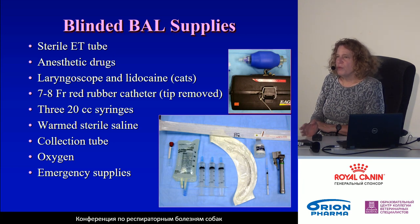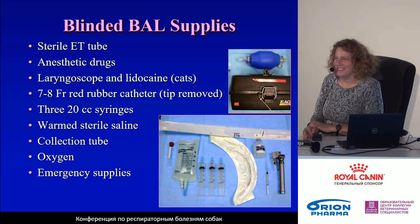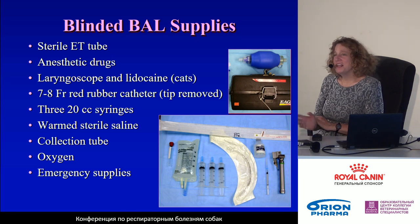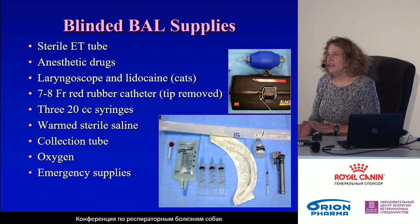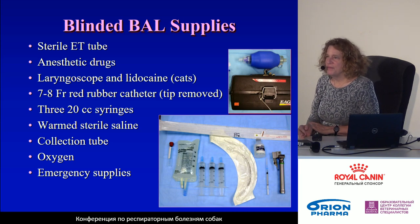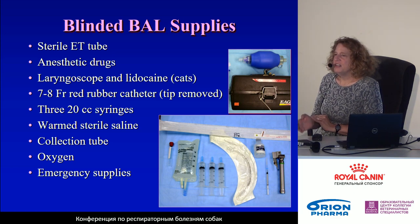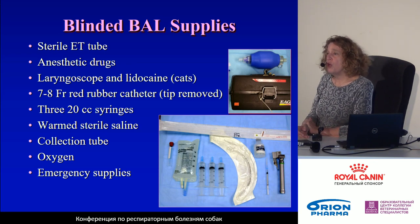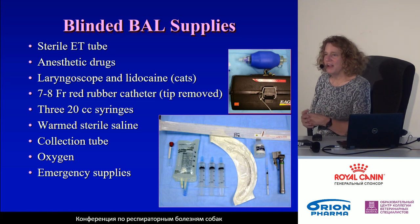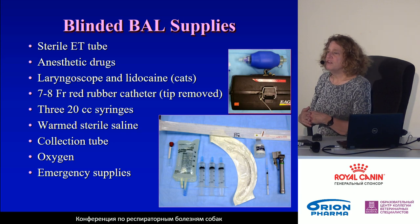Every one of you can do a blinded bronchoalveolar lavage. The equipment is readily available — it's things you already have. The technique is very simple. The technique I'm going to show you is most useful for small dogs and cats, which is convenient because we often use it in cats we suspect have asthma or in smaller, younger dogs when we're trying to determine the cause of pneumonia.